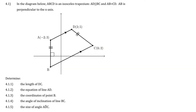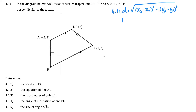The question says: in the diagram below, ABCD is an isosceles trapezium with AD parallel to BC and AB equal to CD. AB is perpendicular to the x-axis. Question 4.1.1 asks us to determine the length of DC. Since I'm finding a length, I'll use the distance formula. Making D the first point and C the second: the square root of (6 minus 2) squared plus (2 minus 5) squared. I get 5 units.